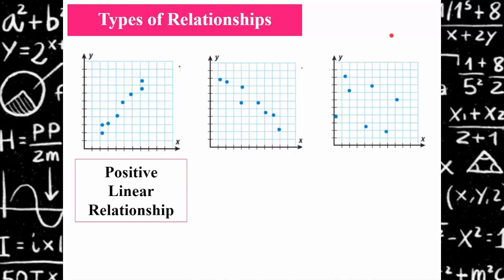There are many types of relationships that could be distributed into a scatter plot. You could have a positive linear relationship, showing that as x is increasing, y is also increasing.